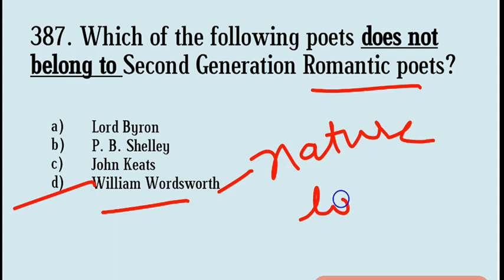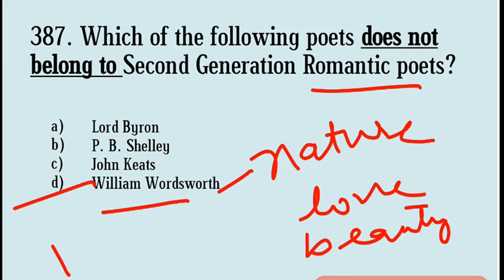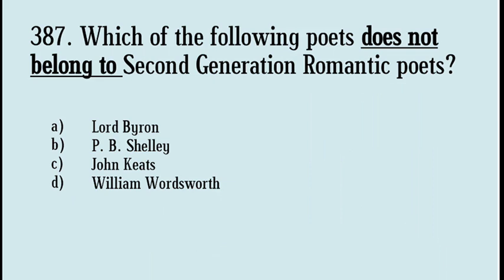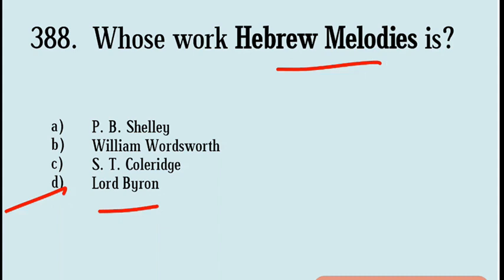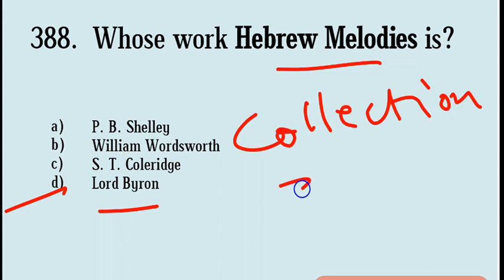Wordsworth was born in 1770 and died in 1850. Next question: Whose work is Hebrew Melodies? Options are P.B. Shelley, William Wordsworth, S.T. Coleridge, Lord Byron. Correct answer: Option D, Lord Byron. Hebrew Melodies is written by Lord Byron; it is a collection of 30 poems published in 1815.